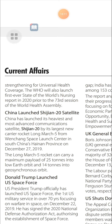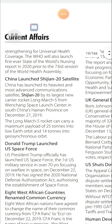China Launched the Xinnjiang-20 Satellite: China launched its heaviest and most advanced communication satellite, Xinnjiang-20, by its largest new carrier rocket Long March 5, from Wenchang Space Launch Center in South China's Hainan province on December 27, 2019. The Long March 5 rocket can carry a maximum payload of 25 tonnes into low Earth orbit and 15 tonnes into geosynchronous orbit.